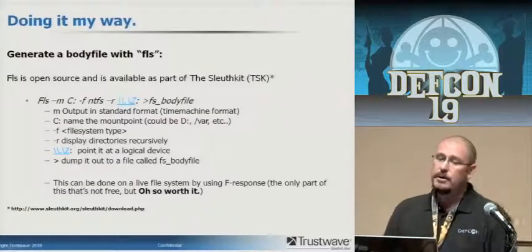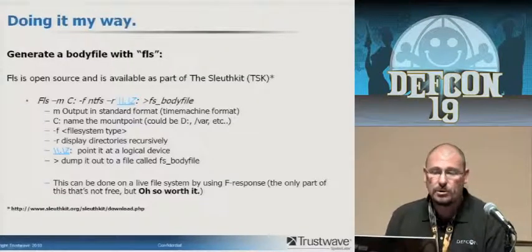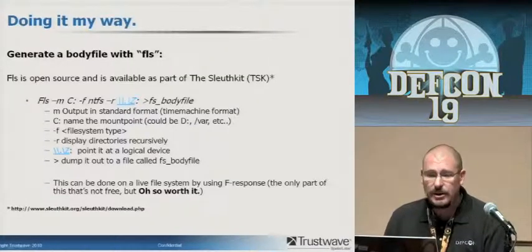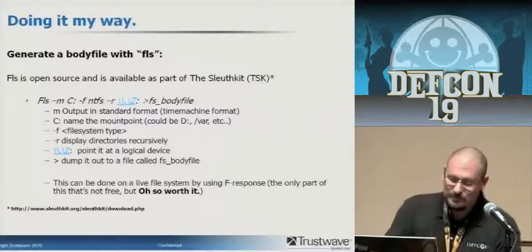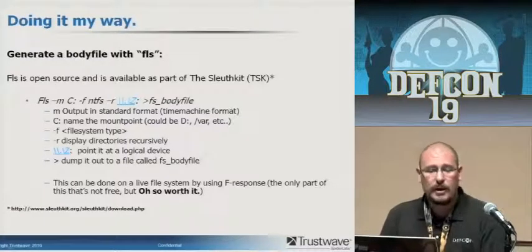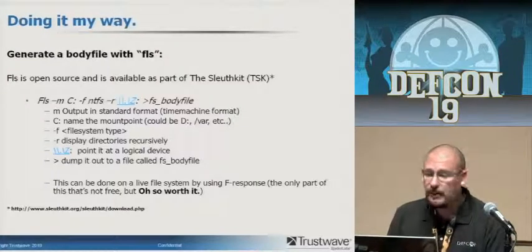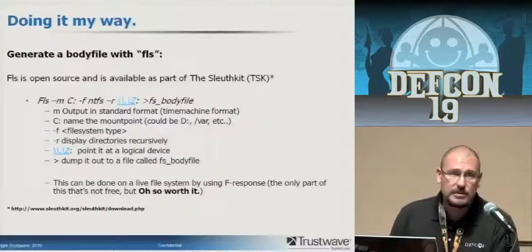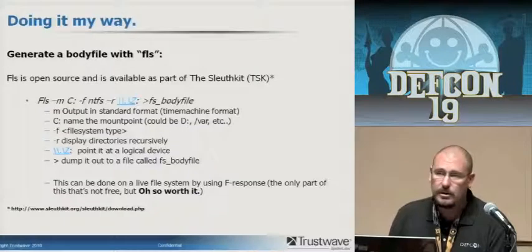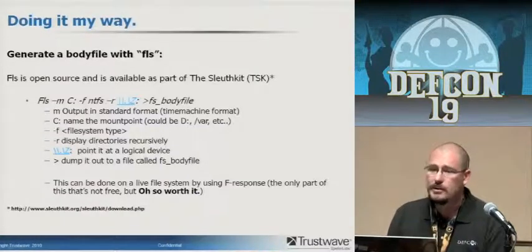The first piece of doing it my way is the command FLS. This is open source, available as part of the Sleuth Kit, a free download from sleuthkit.org. I highly recommend checking it out. The sample command is: FLS -M, name your mount point — this could be slash for root, or C dollar, whatever you want — you're just labeling your drive. Designate the file system — it supports about 16 different file systems, not just NTFS. Recursively search, then point it at either a physical drive by name or a drive letter.